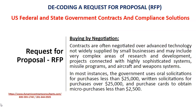Contracts are often negotiated over advanced technology not widely supplied by small businesses, and may include complex areas of research and development, projects connected with highly sophisticated systems, missile programs, and aircraft and weapons systems. In most instances, the government uses oral solicitations for purchases less than $25,000, written solicitations for purchases over $25,000, and purchase cards to obtain micro-purchases less than $25,000.